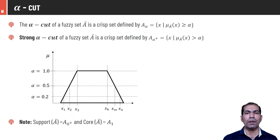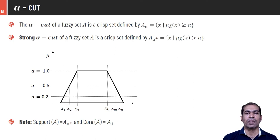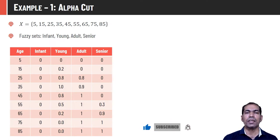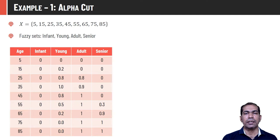Let's understand these concepts with an example. Universe of discourse X is age range 5 to 85. From this, we derive fuzzy sets: infant, young, adult, and senior, as shown in the table with their assigned membership values. There is no infant in the list since age starts from 5 — all elements have membership value 0. For young, a 5-year-old is not considered young so membership is 0. For adult, if age is above 35, membership is assigned accordingly.